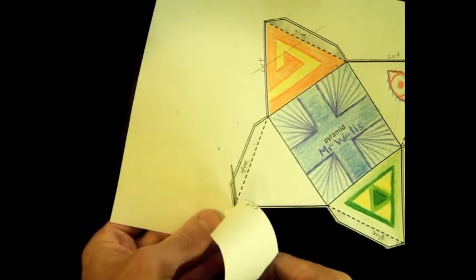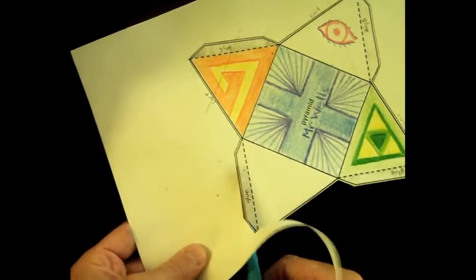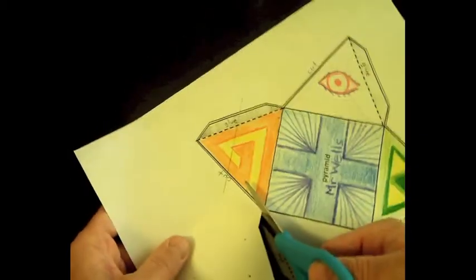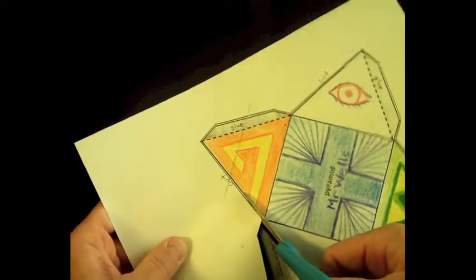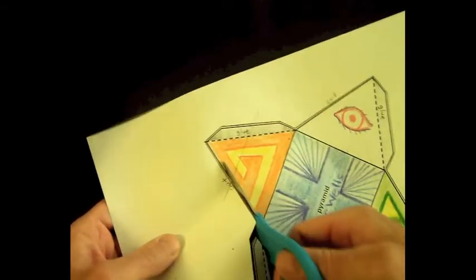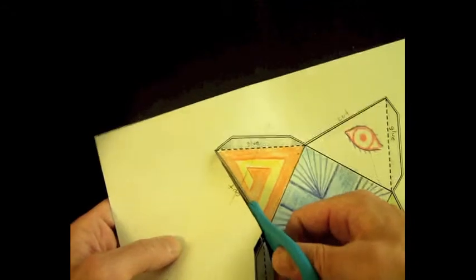We're going to fold on all of the dotted lines. We're going to cut on all of the double lines. Single lines get folded and double lines get cut. Notice the word 'cut' right beside all of the double lines.